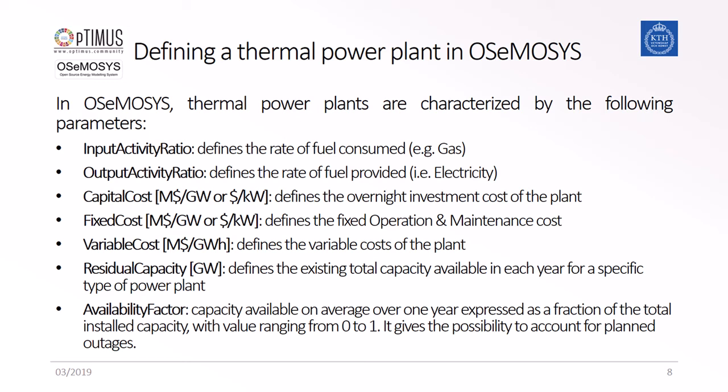The availability factor is the share of hours that the power plant can be operational during a year without being shut down for operational maintenance. OSeMOSYS will, when best suited during the year for the amount of hours defined, set the energy production to zero for that technology.